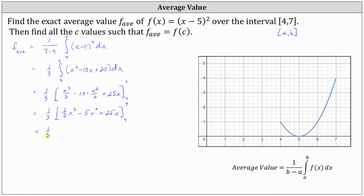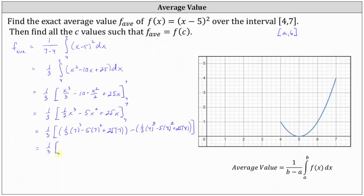We need to determine one third times the difference of F(7) and F(4). F(7) equals one third times seven cubed, minus five times seven squared, plus 25 times seven. Minus F(4), which is one third times four cubed, minus five times four squared, plus 25 times four. F(7) simplifies to 133 thirds, and F(4) simplifies to 124 thirds. That gives us one third times (133 thirds minus 124 thirds), which is nine thirds, simplifying to three. One third times three equals one, so the average value of f(x) over the closed interval from four to seven is equal to one.